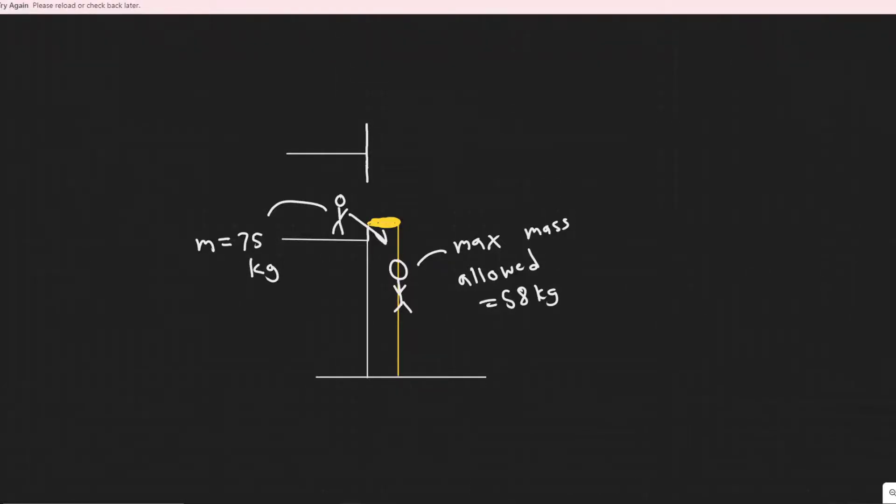Okay, so in this problem we're told a 75 kilogram petty thief wants to escape from a third story jail window. Unfortunately, a makeshift rope made of sheets tied together can support a mass of only 58 kilograms. How might the thief use this rope to escape? Give a quantitative answer.